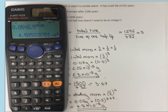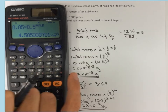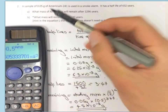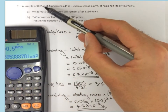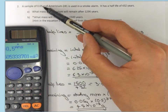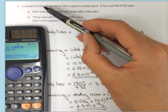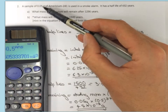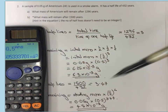As mentioned at the start of the video, it doesn't really matter whether you're given the starting mass, the starting number of nuclei, the starting count rate, or the starting activity — the maths and the method all work out to be the same.